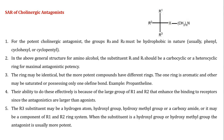In the general structure for amino alcohol, the substituents R1 and R2 should be a carboxylic or a heterocyclic ring for maximal antagonist potency. The rings may be identical, but the more potent compounds have different rings — one ring is aromatic and the other may be saturated or possessing only one olefin bond, like propantheline. The large R1 and R2 groups enhance binding to receptors, since antagonists are larger than agonists.